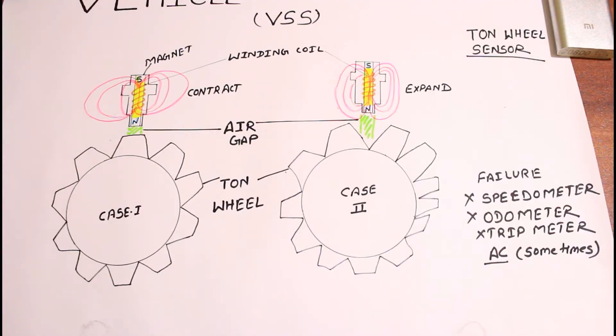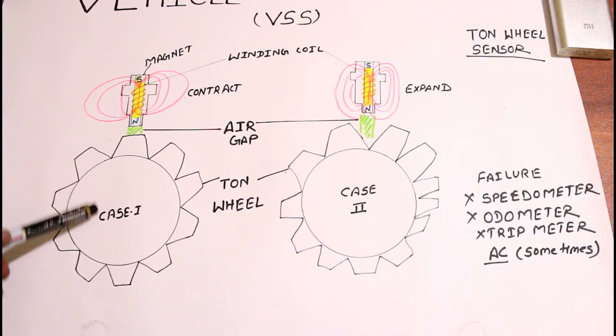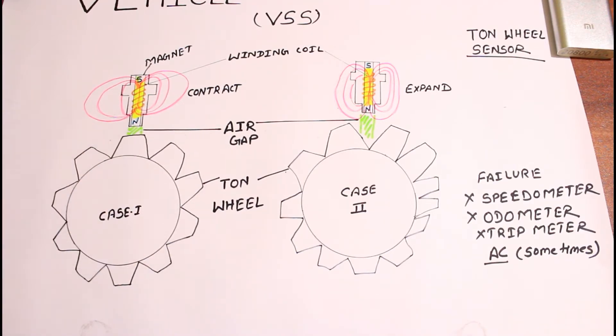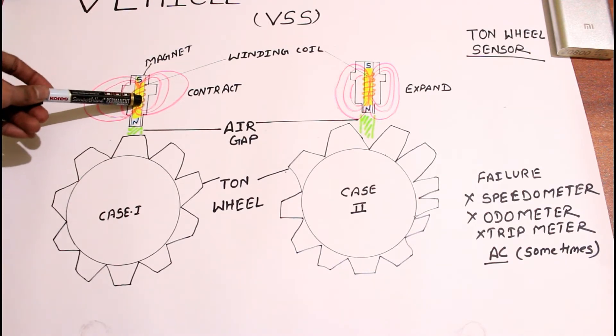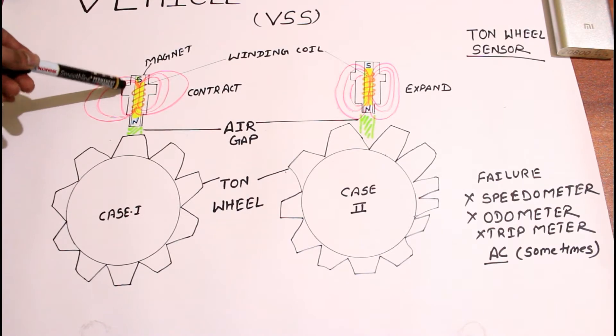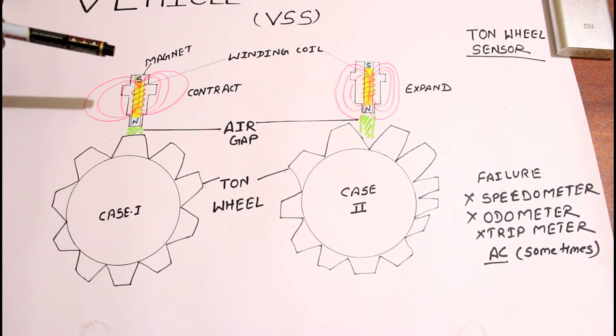A wheel speed sensor or vehicle speed sensor is a type of tachometer which is located near the tone wheel. The tone wheel is a gear connected with the wheels having teeth on it, and the sensor consists of a stator which is the outer surface of the sensor filled with a permanent magnet and a soft iron core surrounded by an induction coil or winding.